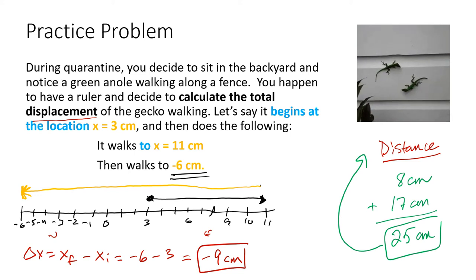Its displacement, however, was negative 9 because of where it started originally. So basically, it's based on where you start from and where you end up.